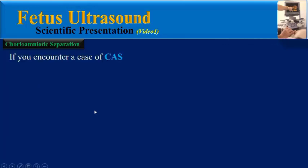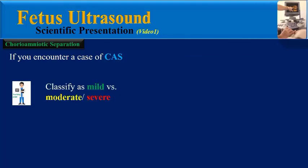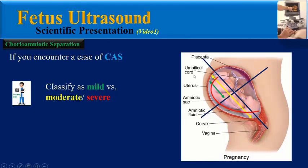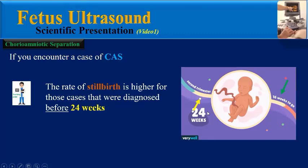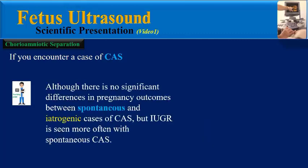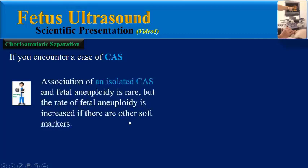Final teaching points: CAS after 14 to 16 weeks of gestation appears to be a useful sonographic sign of possible abnormal fetal development. Try to classify the patient as mild versus moderate or severe. The rate of stillbirth is higher for cases diagnosed before 24 weeks. There are no significant differences in pregnancy outcomes between spontaneous and iatrogenic CAS, but IUGR is seen more often with spontaneous CAS.